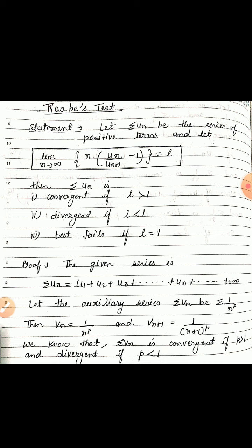The given series summation u_n can be written as u_1 + u_2 + u_3 + ... + u_n + ... up to infinity. Let us consider the auxiliary series summation v_n equal to summation 1/n^p, the p-series. Then v_n = 1/n^p, and replacing n by n+1 we get v_{n+1} = 1/(n+1)^p. By the p-series test, summation v_n is convergent if p > 1 and divergent if p ≤ 1.